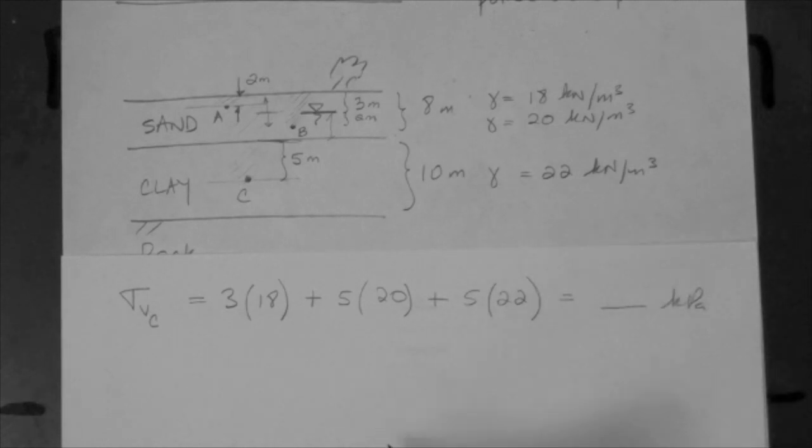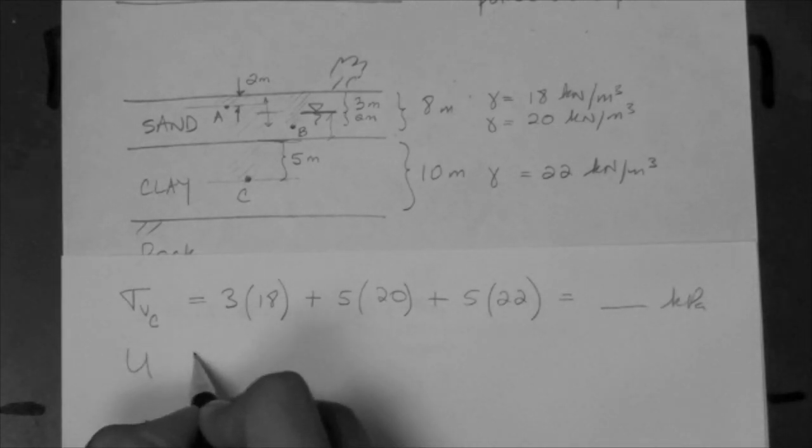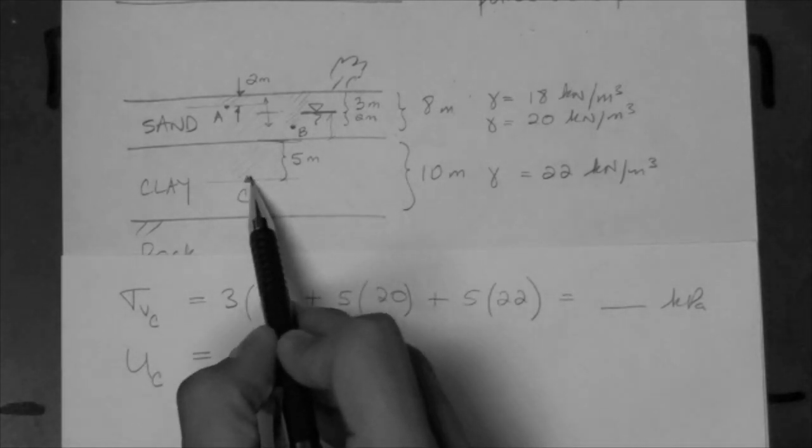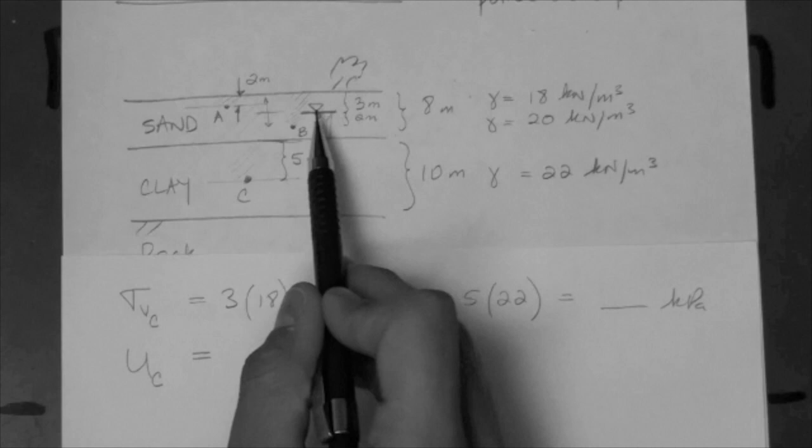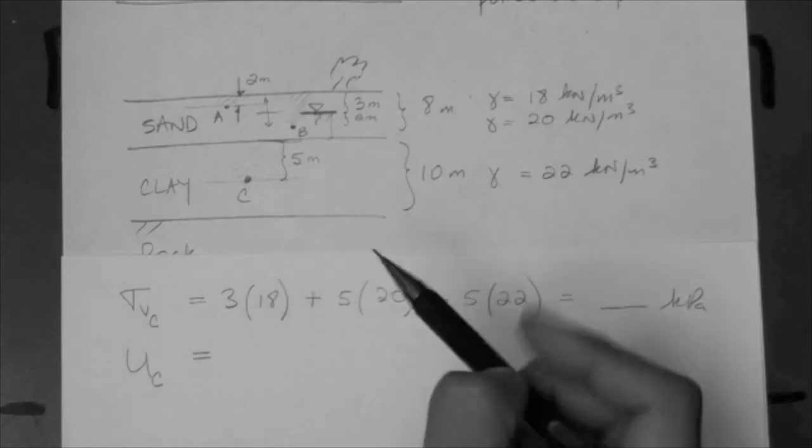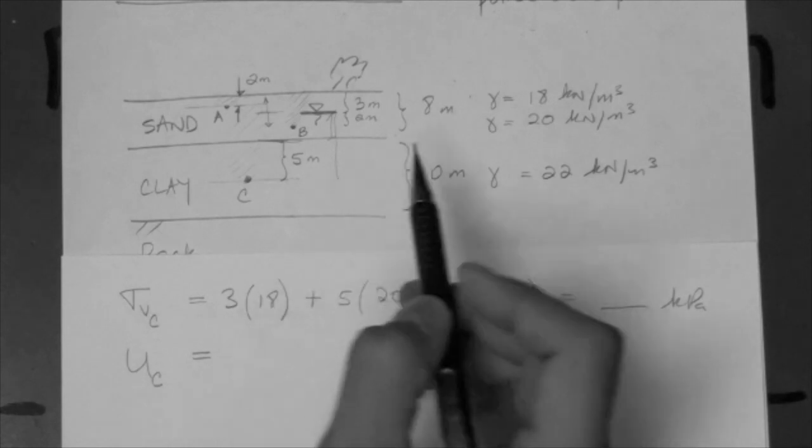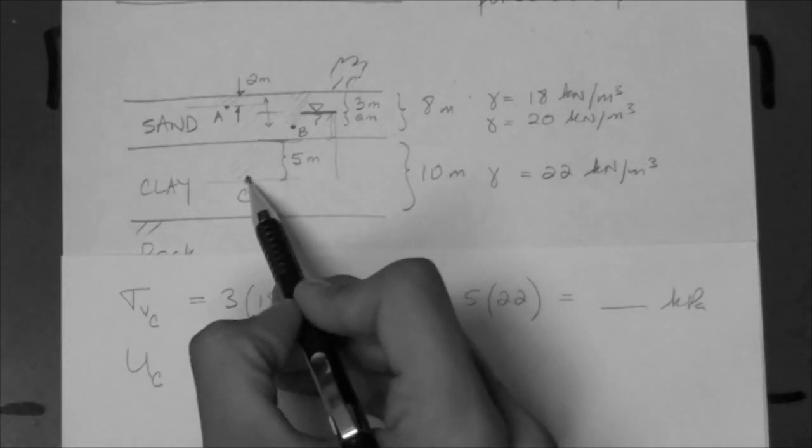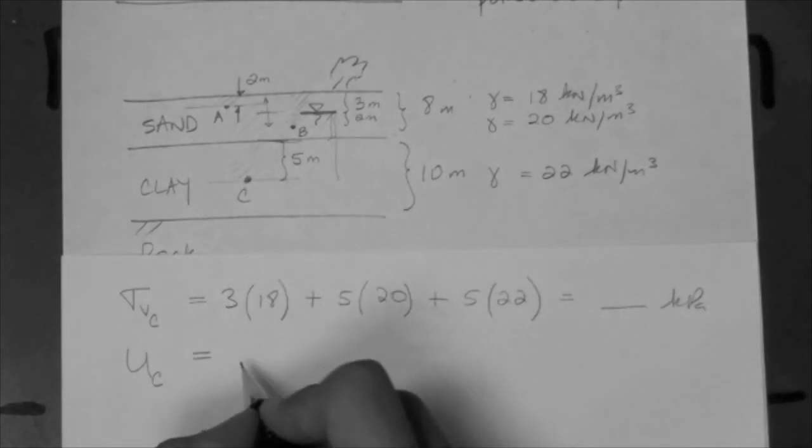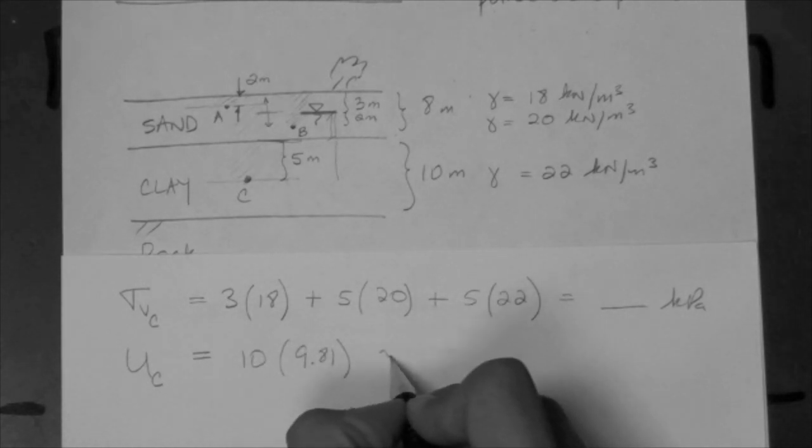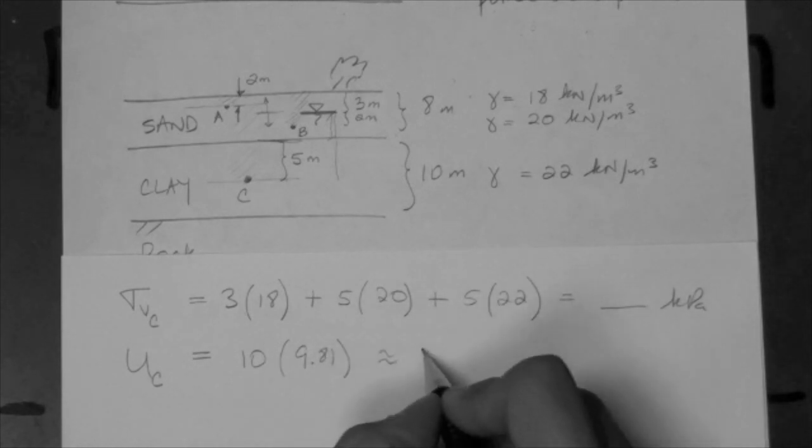That is the vertical stress. What is the pore pressure at point C? Here's the water table, so there's five meters plus five meters, that's ten meters of water above this point. That's a pressure head: 10 meters of water times 9.81, that's gamma. So this is about 10 times 10, which is 100.